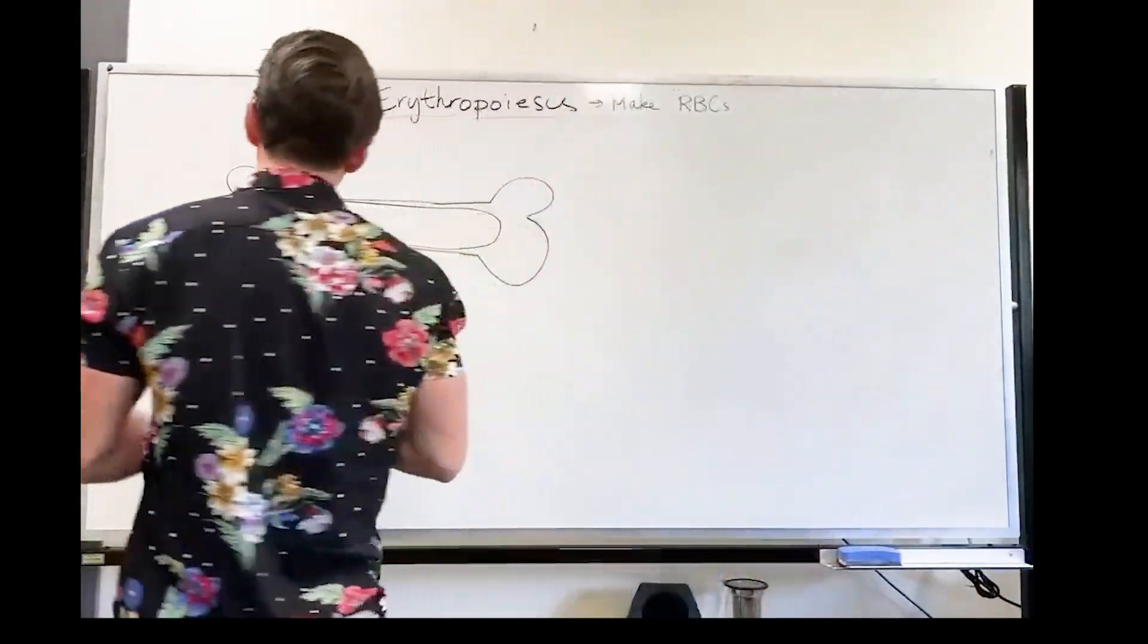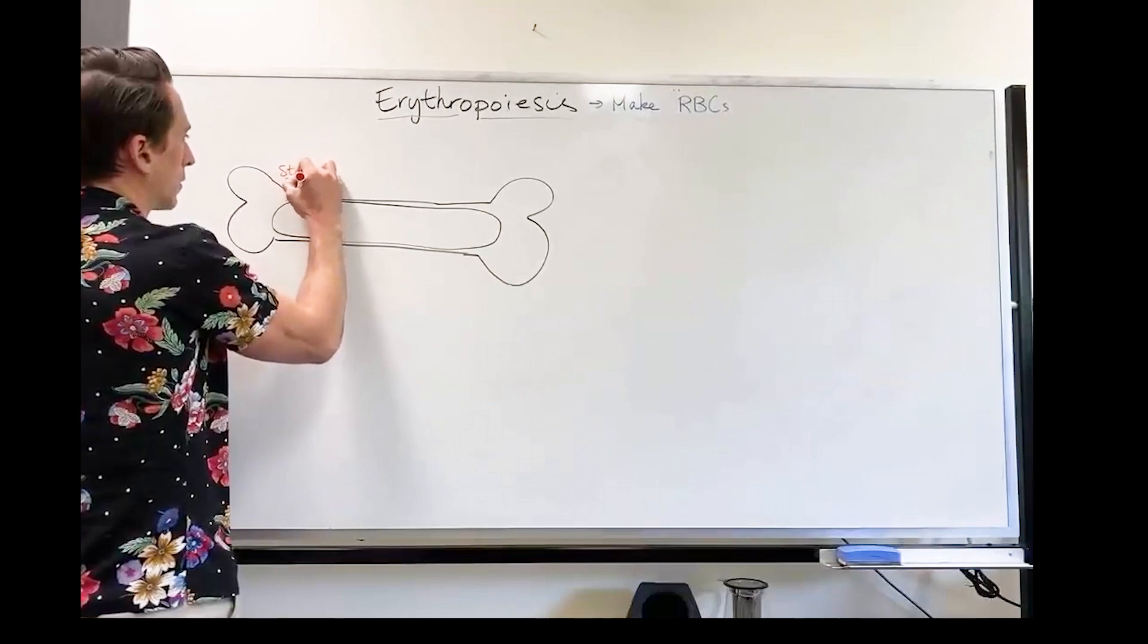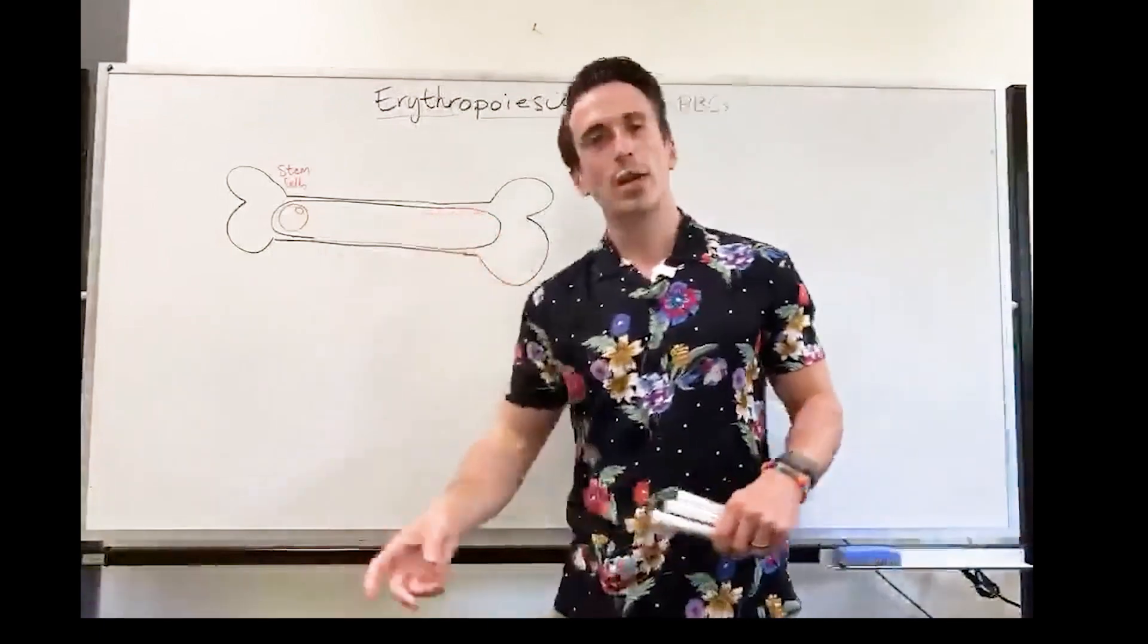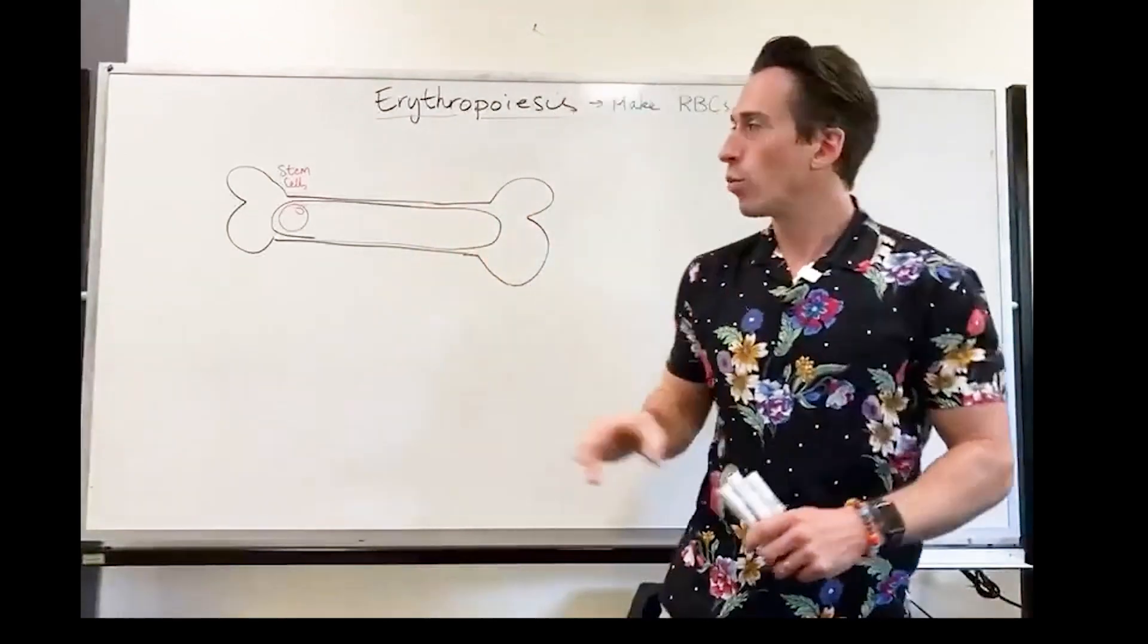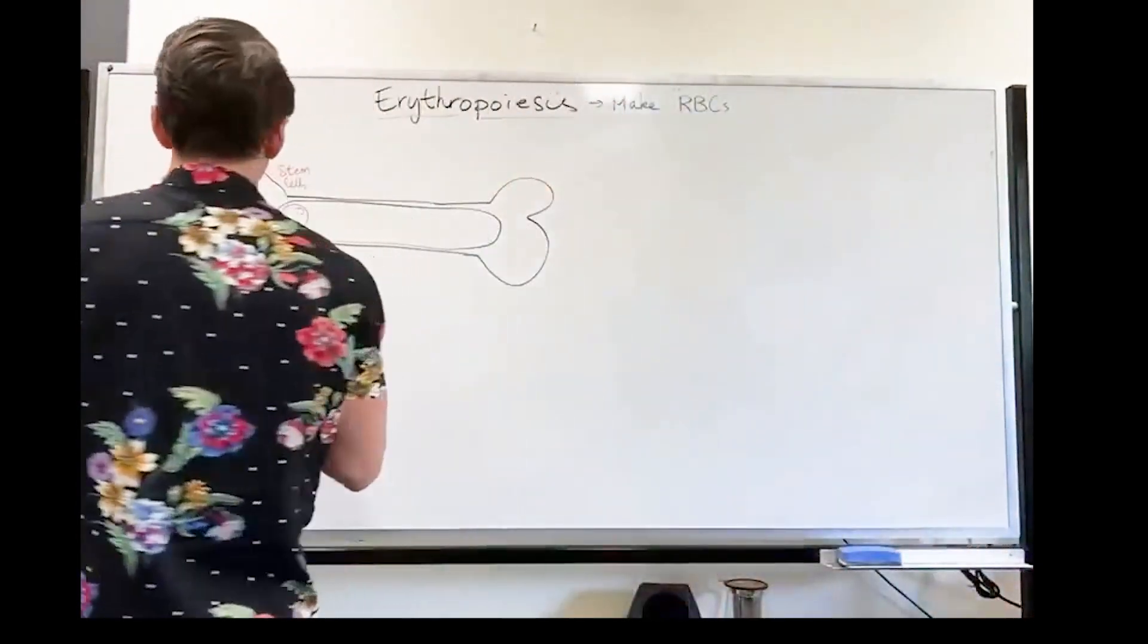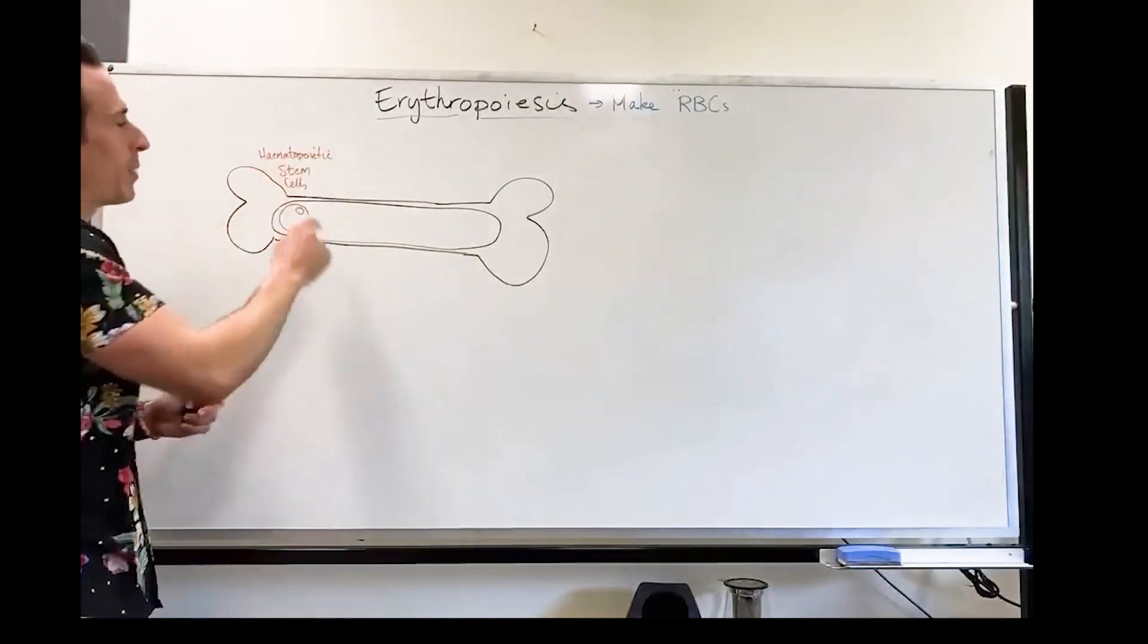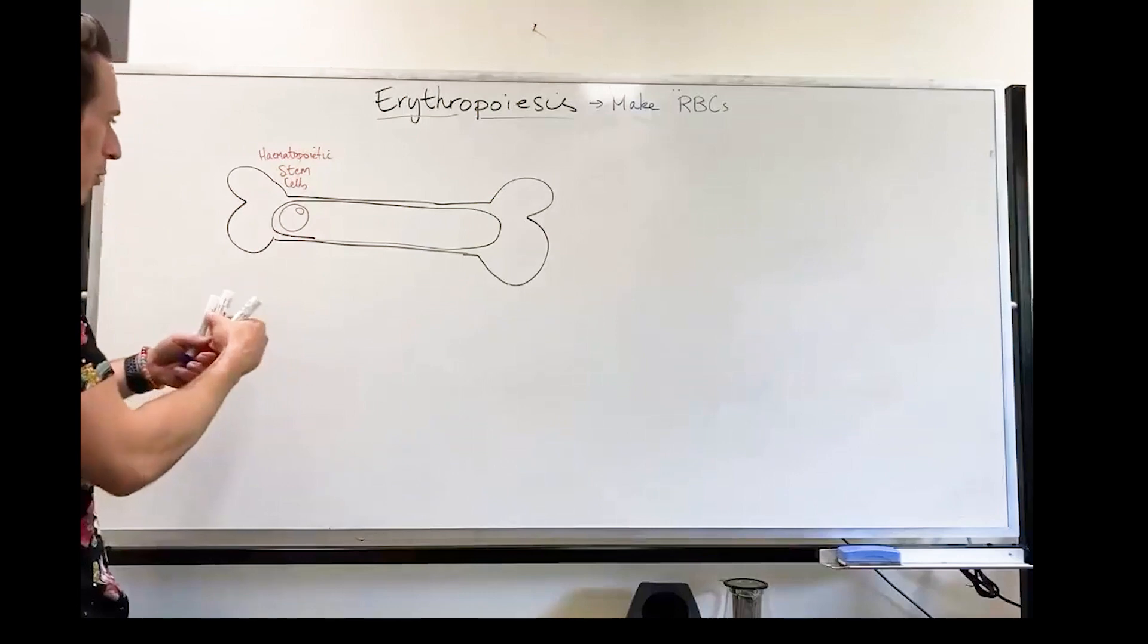First thing is, in our bone marrow we have stem cells. Let's draw up a stem cell. Now what a stem cell is, is a cell that can basically turn into any other cell of the body. Now the stem cells in our bone marrow can't turn into skin cells or retinal cells or liver cells, they can only turn into a range of blood cells. So they're not just called generic stem cells, they're called hematopoietic stem cells. Basically meaning blood cell production stem cells. So these stem cells can turn into any lineage of blood cells.